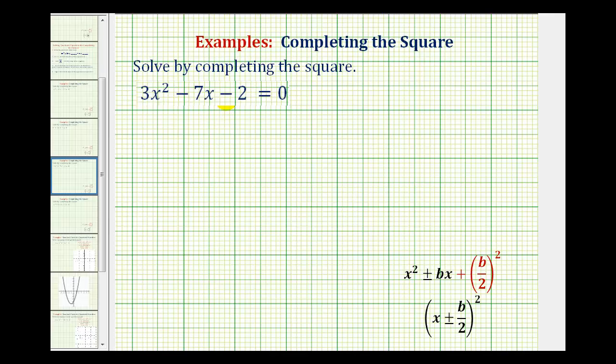The first step here will be to move the constant term to the right side of the equation. To undo minus two, we'll add two to both sides of the equation.